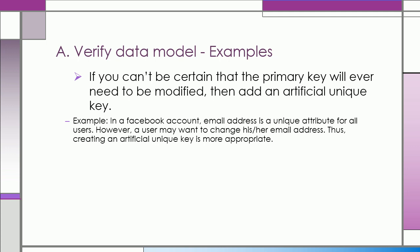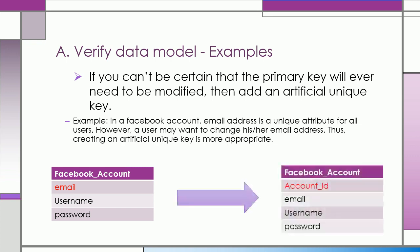For example, in a Facebook account, email address is a unique attribute for all users. However, a user may want to change his or her email address. Thus, creating an artificial unique key is more appropriate, which is the account ID.